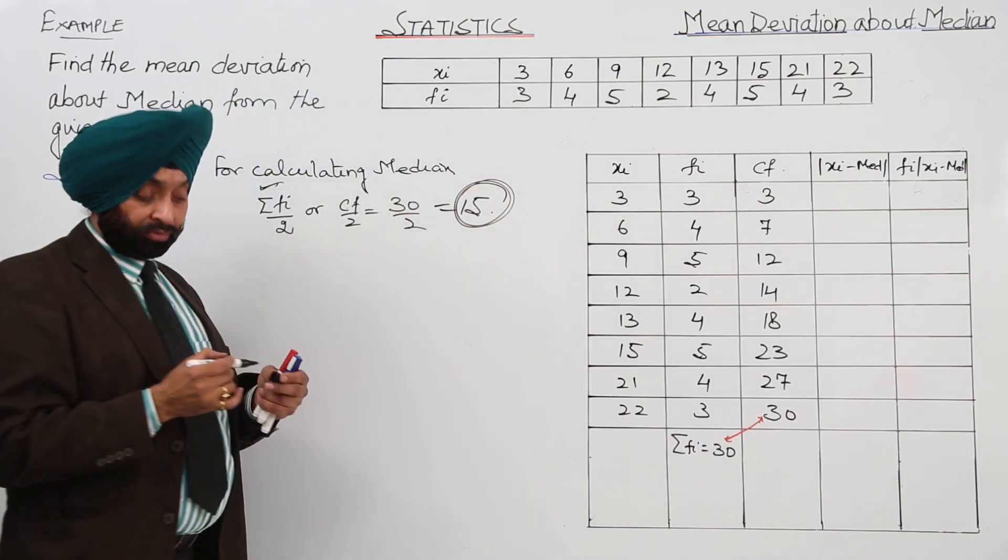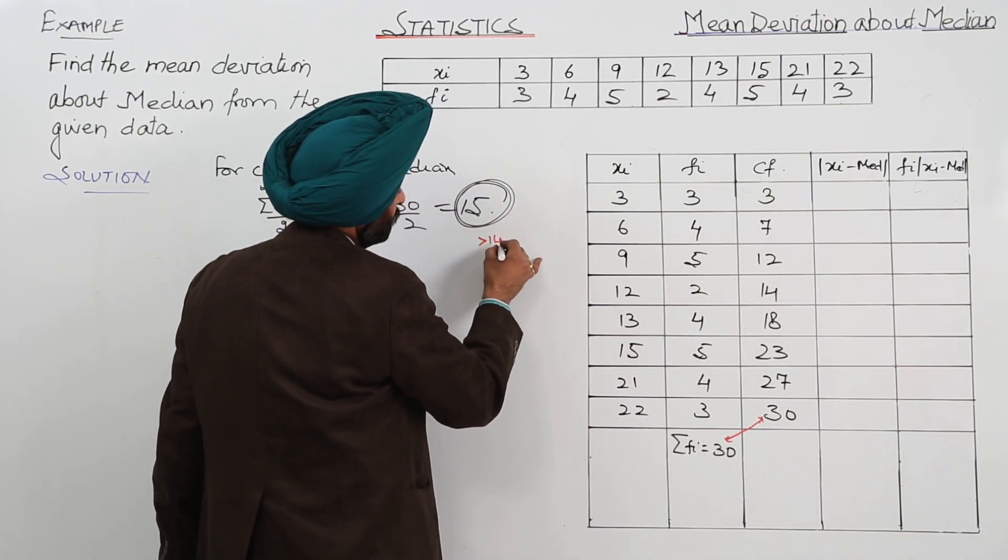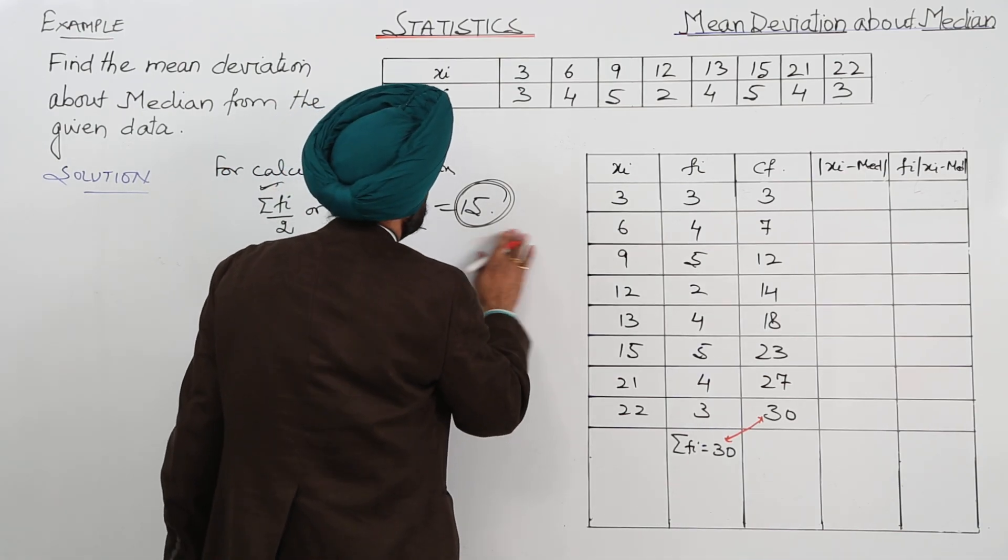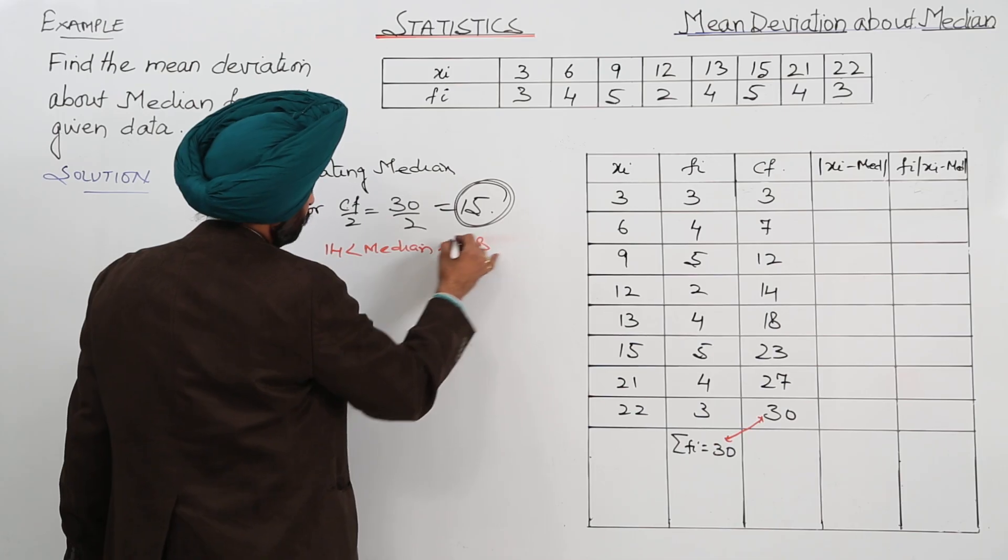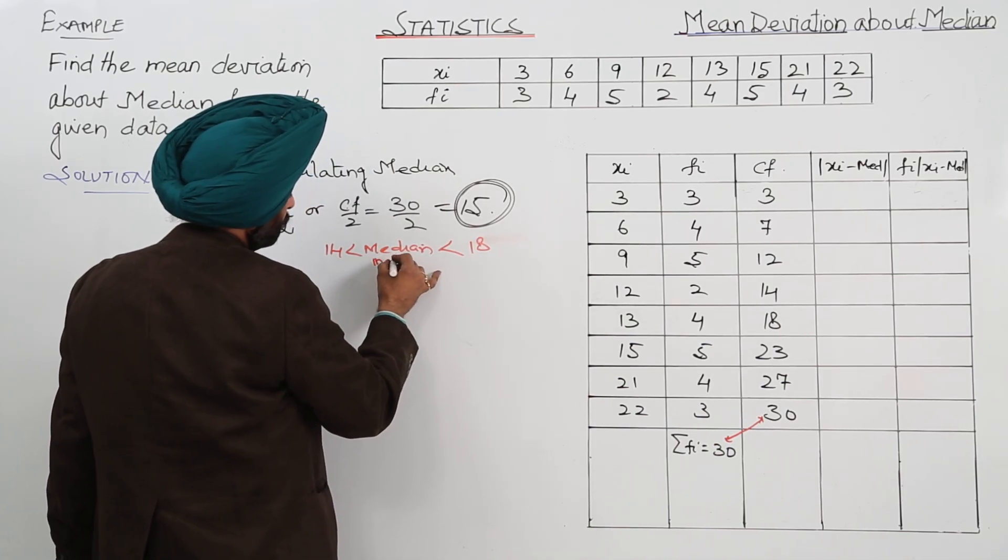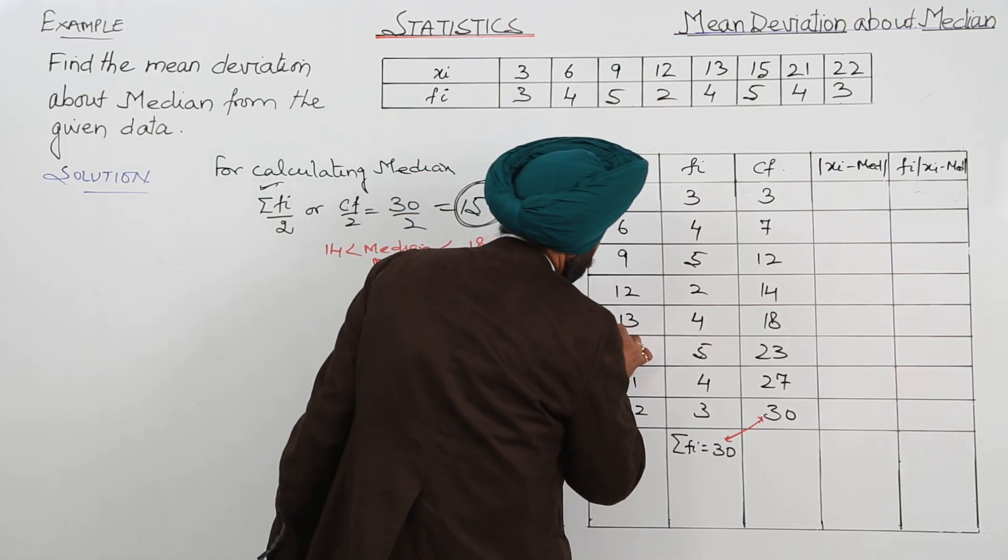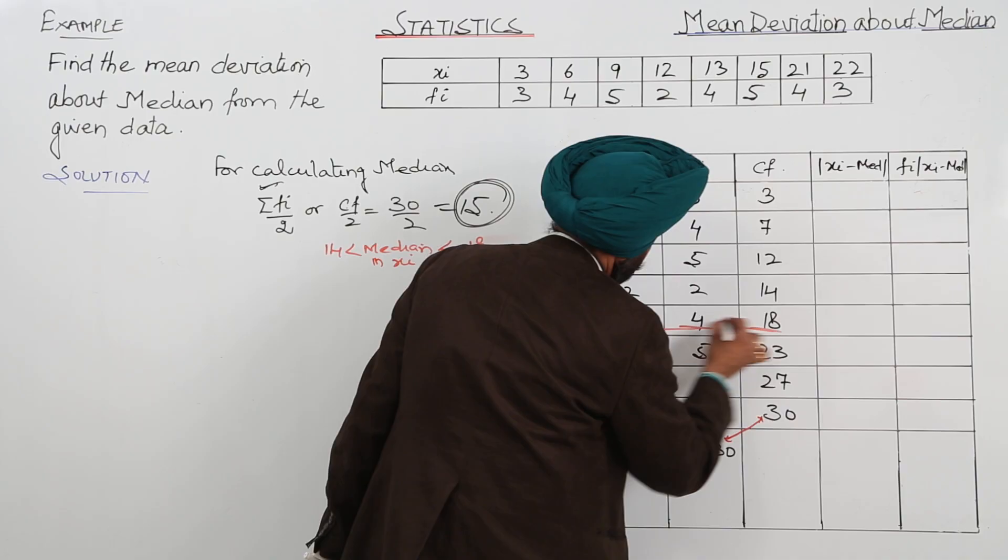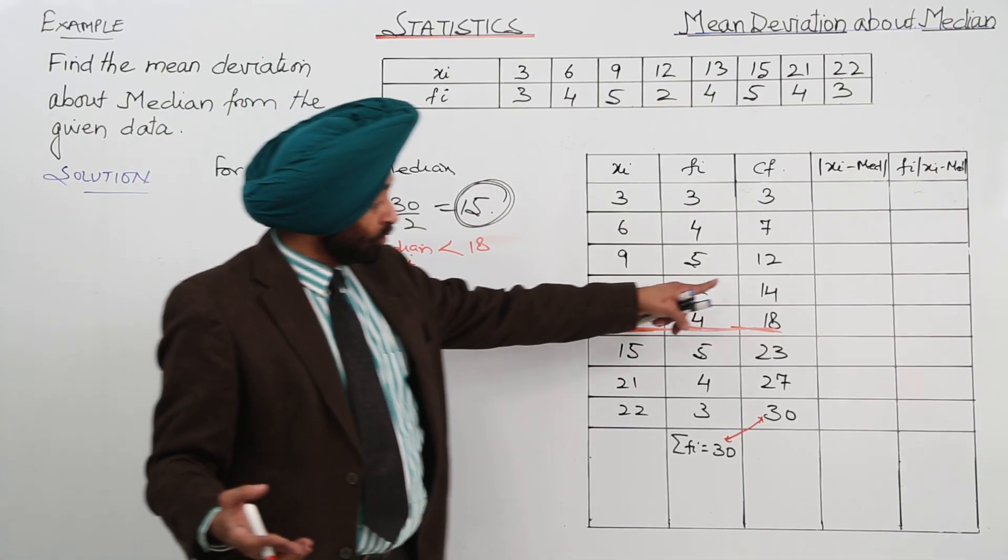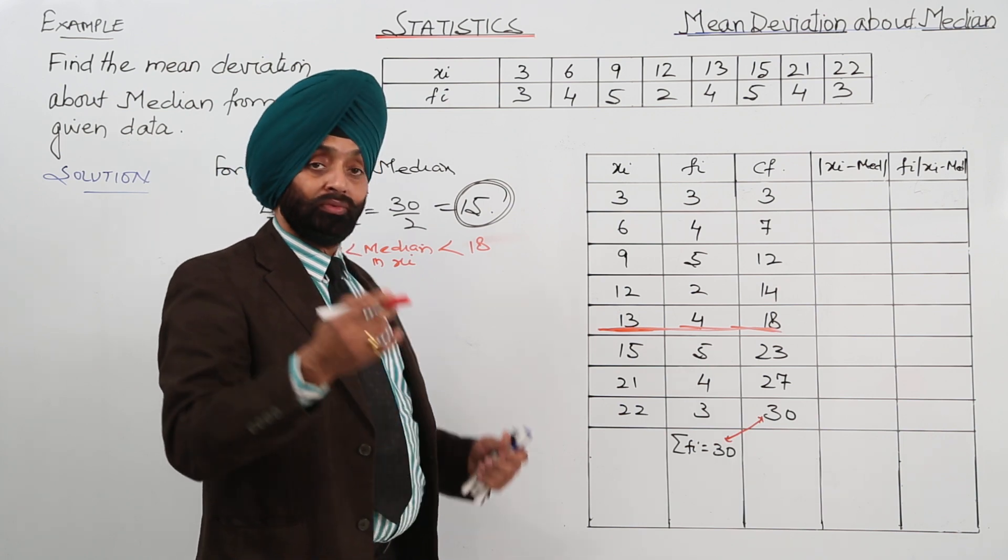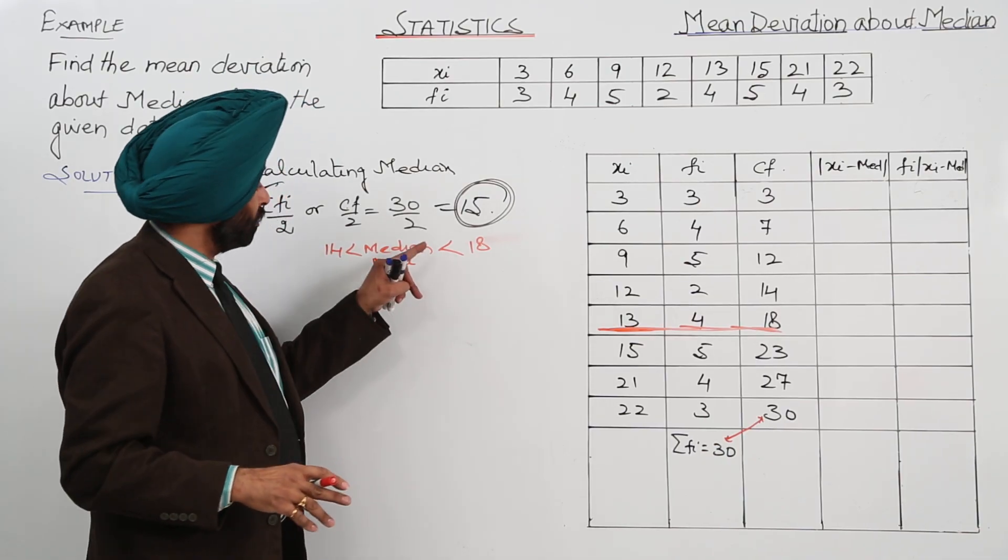Now what this means? What this 15 means? That from 14 onwards. Now greater than 14. Or I will write it. Now 14 is less than median is less than 18. Median in Xi. Now in between 14 and 18, we are having this term. So you have to draw a line here. Don't draw a line on the 14. We are having 30 upon 2 more than 14. So just move more than 14 till 18. Now whatever the value falls in between 14 and 18, median will be what? Median will be.